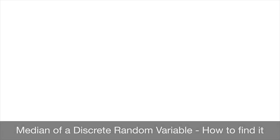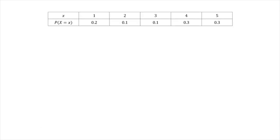We now learn how to find the median value of a discrete random variable, and we're going to do so using an example. We can see here that we're given the probability distribution table of some discrete random variable, which we're calling capital X. The first thing we'll need to do in order to find the median is to add a row to this table in which we show the cumulative probability. We've already seen how to do that, but let's just quickly remind ourselves.